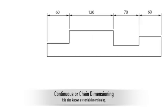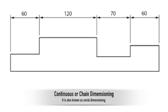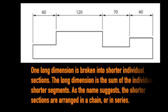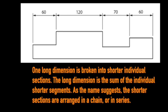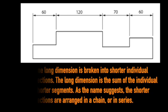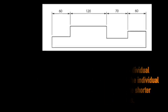Continuous or chain dimensioning, also known as serial dimensioning. One long dimension is broken into shorter individual sections. The long dimension is the sum of the individual shorter segments. As the name suggests, the shorter sections are arranged in a chain, or in series.